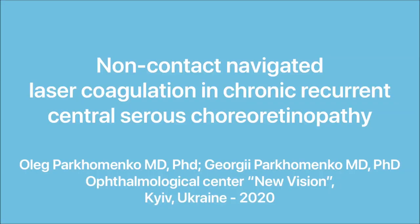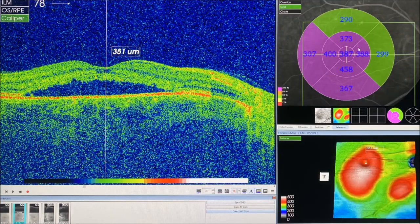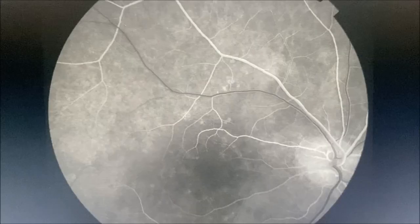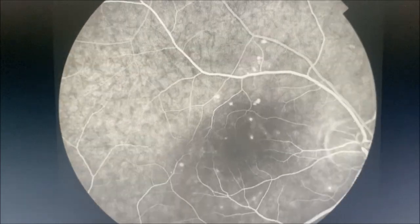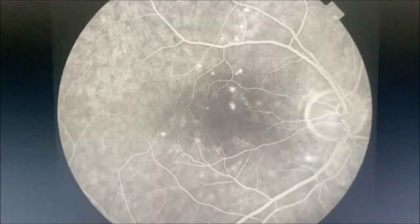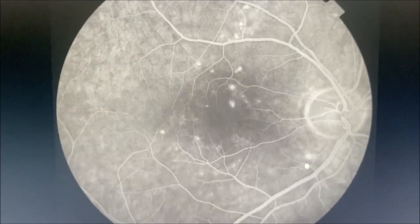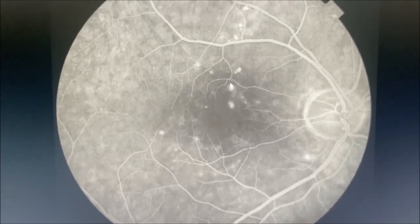Non-contact navigated laser coagulation in chronic recurrent central serous chorioretinopathy. Two areas of subretinal fluid were evident on OCT. On fluorescein angiography, three points of leakage were revealed and are marked with a pointer.